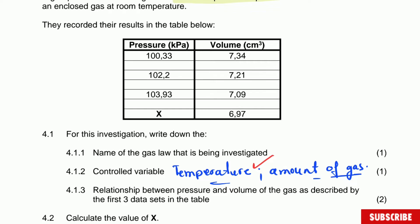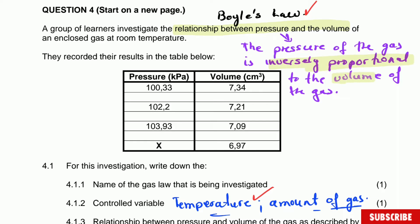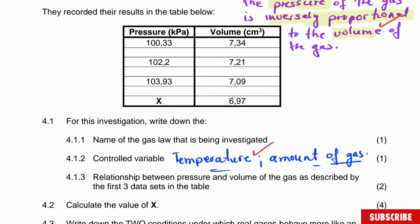The relationship between pressure and volume of gas as described by the first three data sets in the table. You're supposed to know Boyle's Law, you're supposed to say that the pressure of the gas is inversely proportional to the volume of the gas at constant temperature. Pressure is inversely proportional to volume, and that in other words is the law.